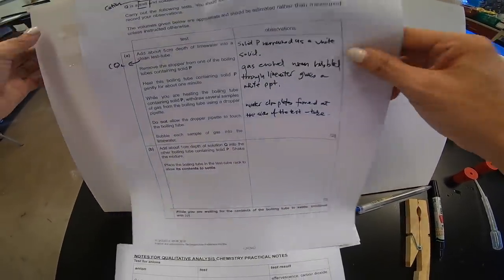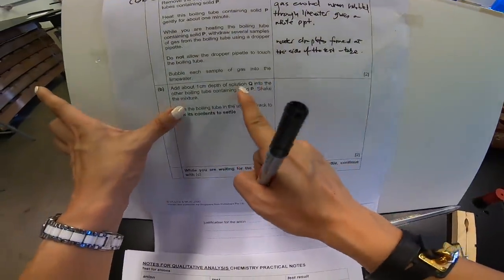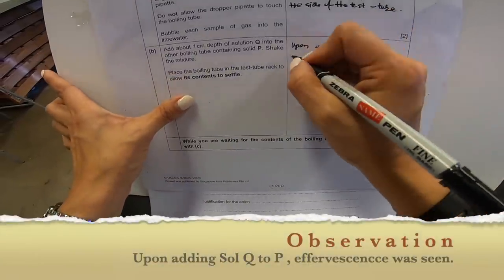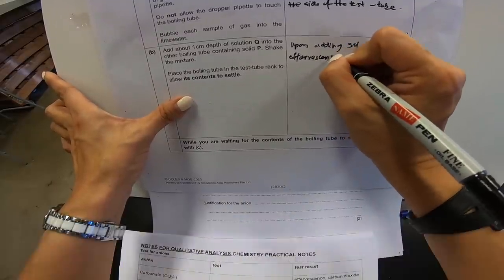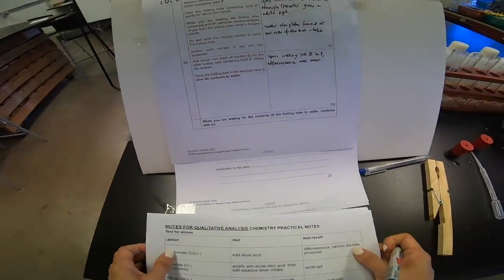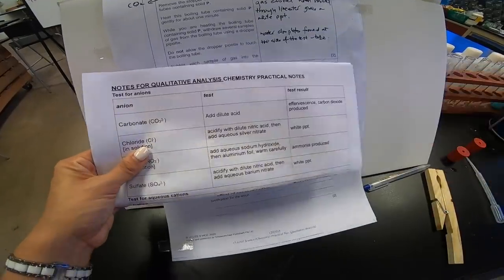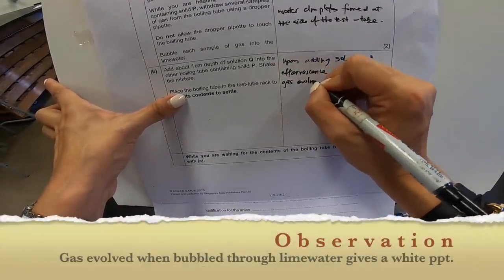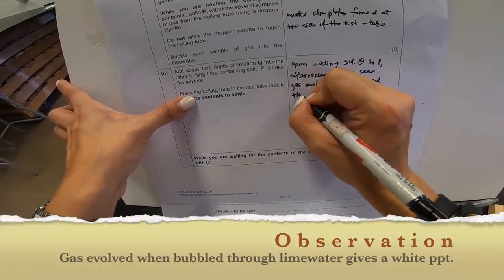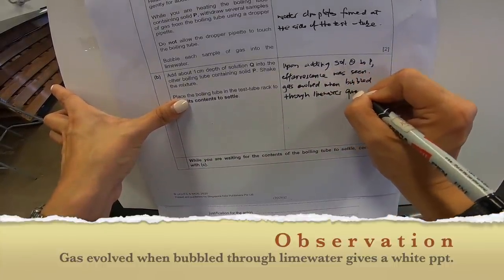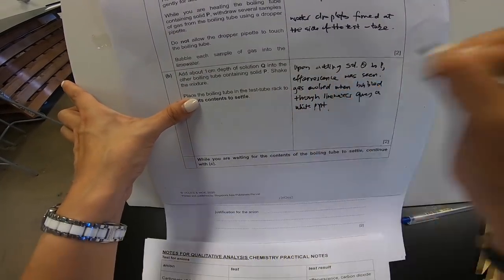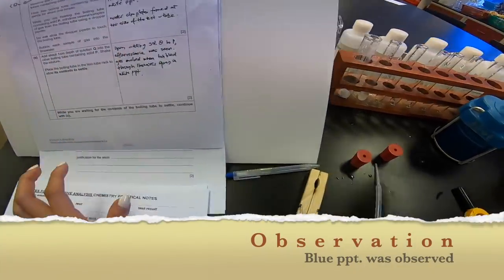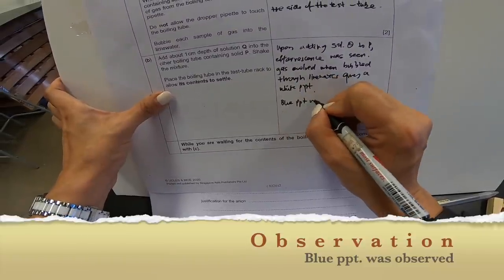Well, I don't get a white precipitate. But, like I always say, if there's effervescent, there is existence of gas. So, what I'm going to do is I'm still going to take a risk and write down suspecting that it is actually carbon dioxide. So, let me shift the paper up. I'm going to write down the observation. So, just now when I add whereupon adding solution Q to P. Effervescent, E-F-F-E-R-V-E-S-C-E-N-C-E. Effervescent was seen. Gas evolved when bubble through lime water gives a white PPT. Secondly, it's quite obvious over here that upon adding solution Q into solid P, a blue precipitate is formed. So, I'm going to say a blue PPT was observed.